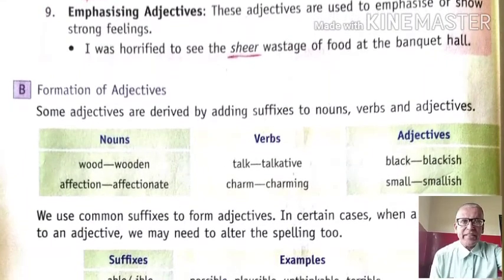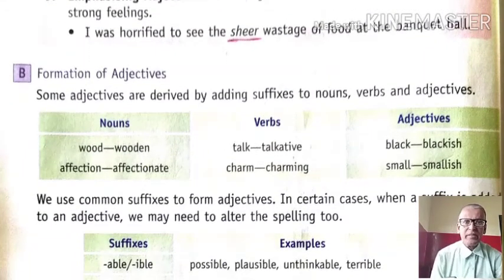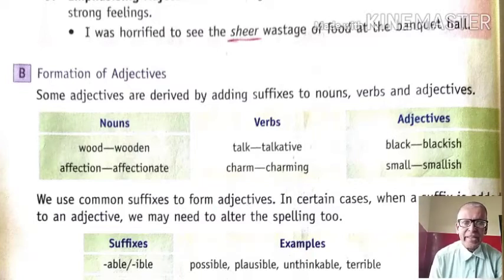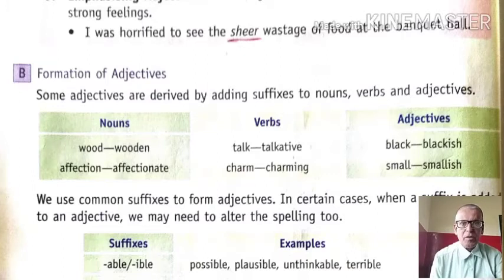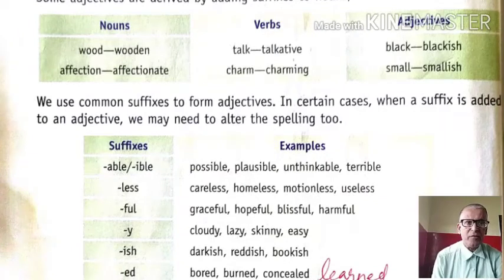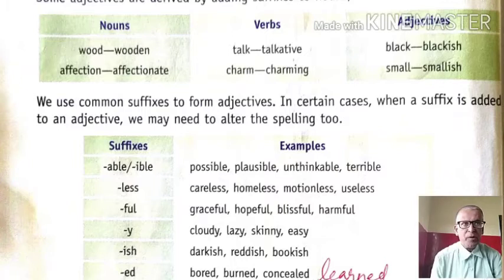Now we will see the formation of adjectives, which is very important. Adjectives can be formed from nouns, from verbs, and from adjectives by adding suffixes. Some examples: wood → wooden, affection → affectionate, talk → talkative, charm → charming, black → blackish, small → smallish. We use some common suffixes to form adjectives. In certain cases, when a suffix is added, we may need to alter the spelling too, so we should be careful about any change in the spelling.